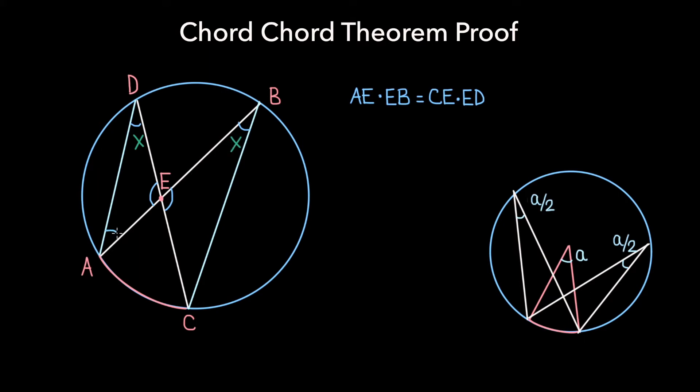And by that same logic, the angles formed at points A and C must be equal, because they are both subtended by the arc BD, and let's call these angles Y. And this means that the remaining angle in each triangle must be 180 minus X minus Y.